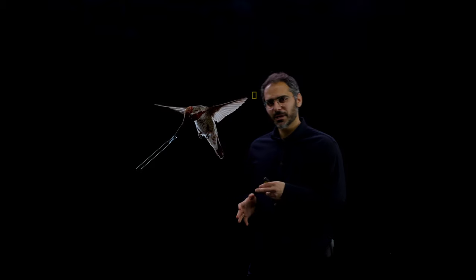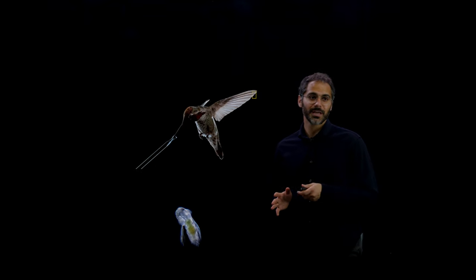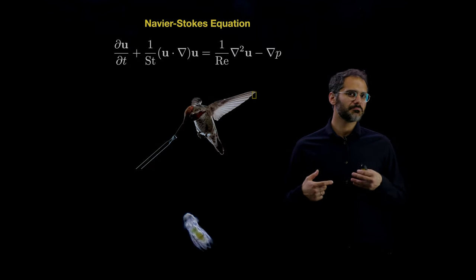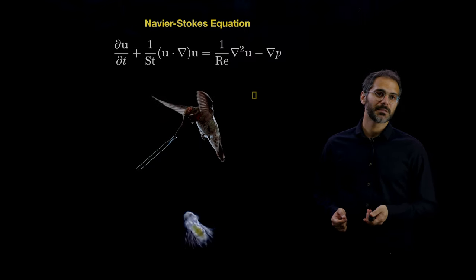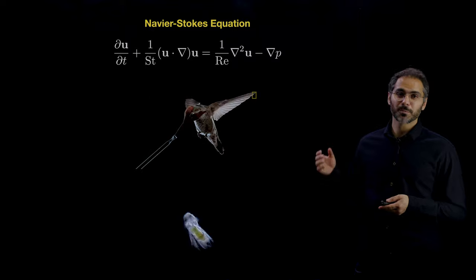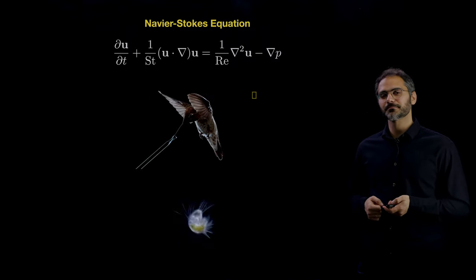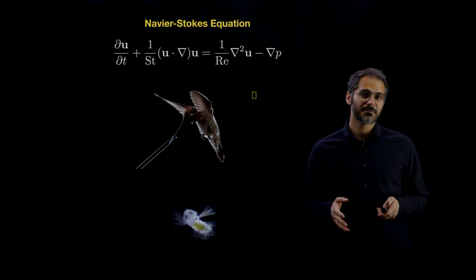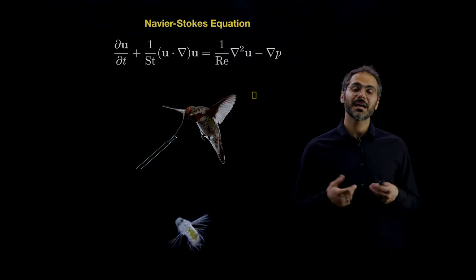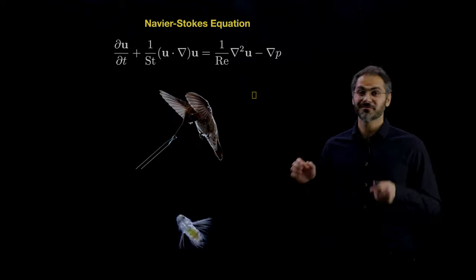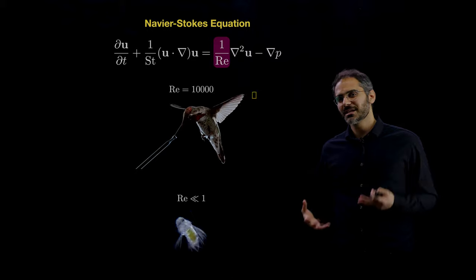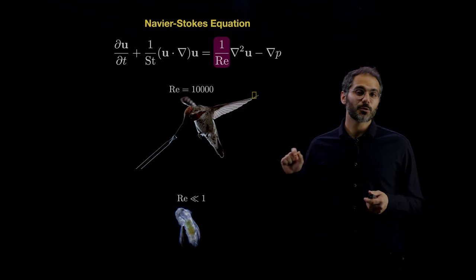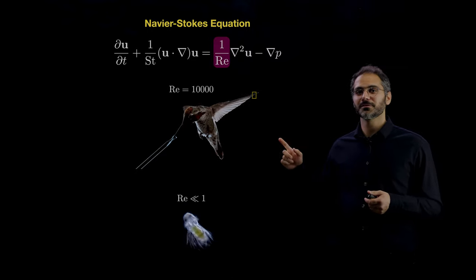What's the difference between a flying hummingbird and a swimming microorganism? It's not the equations that describe the dynamics of the fluid surrounding them — the Navier-Stokes equation describes both air and water. The difference is in the scales: the length scales, the viscosity scales, the velocity scales. All these differences are illustrated and quantified by just one number: the Reynolds number.